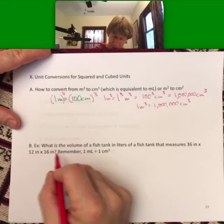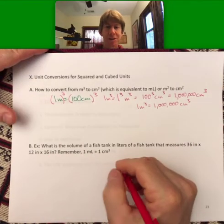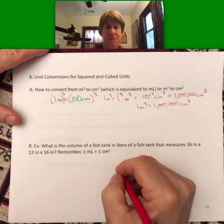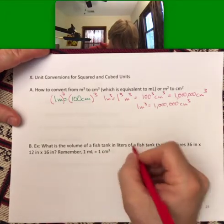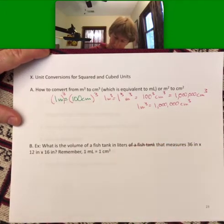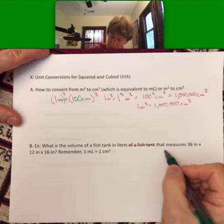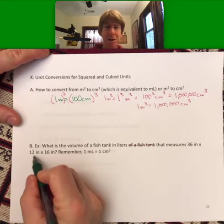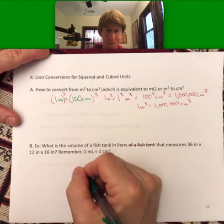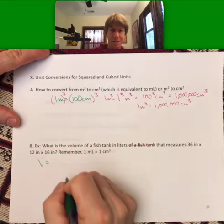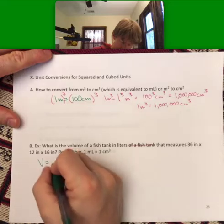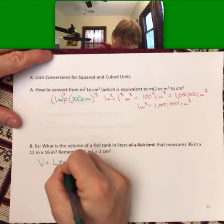Let's do an example. It says what is the volume of a fish tank in liters of a fish tank that measures 36 inches by 12 inches by 16 inches? So volume is length times width times height.